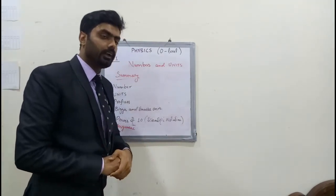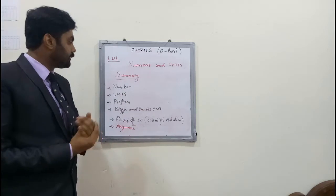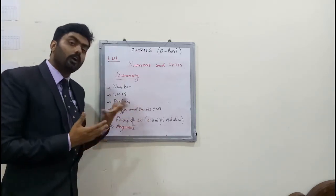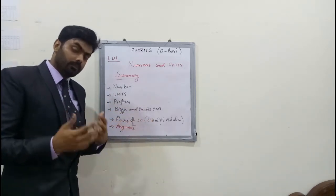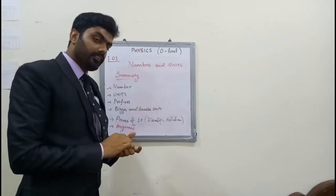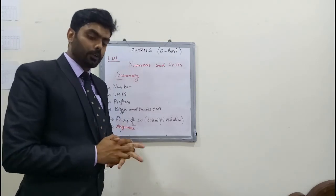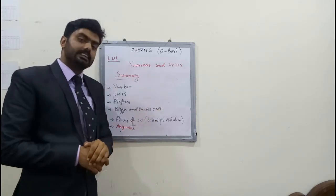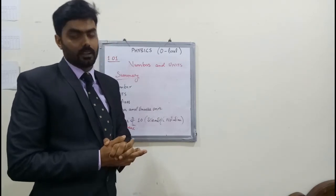Students, I hope you have learned the topics I summarized here under numbers and units: what is a number, what is a unit, how units are made bigger and smaller using prefixes, the power of 10, and how scientific notations are made. You have also reviewed and solved the assignment. The solution will be given in the next lecture. If there are any questions, you can comment below. Thank you very much for watching — stay tuned.